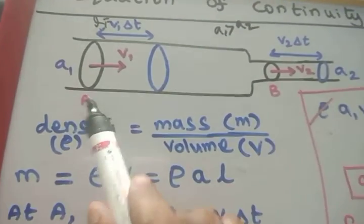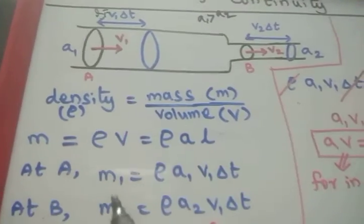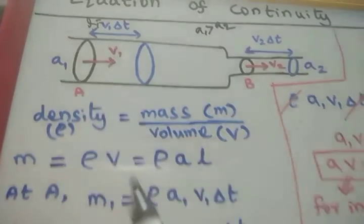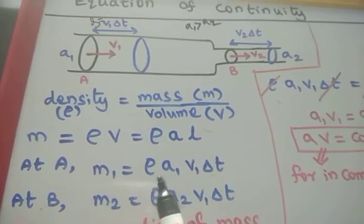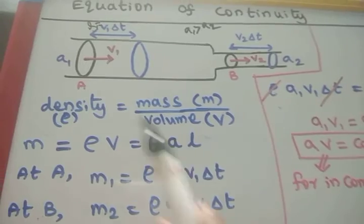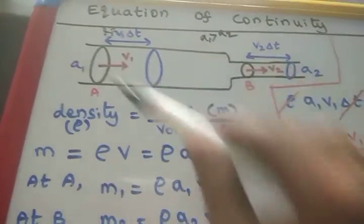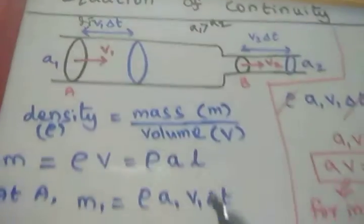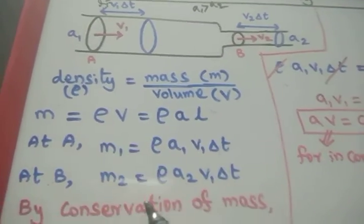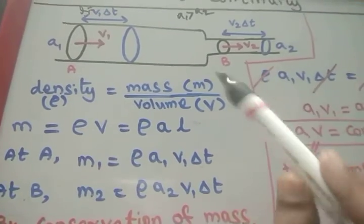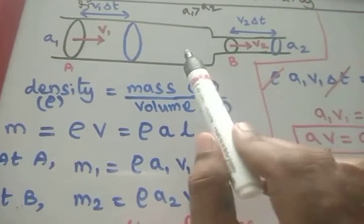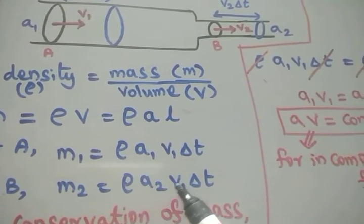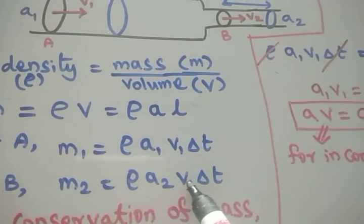The mass of the liquid crossing point A is M1 equals rho times A1 times V1 delta T. Similarly, the mass of the liquid crossing point B is M2 equals rho times A2 times V2 delta T.